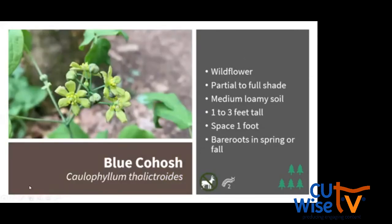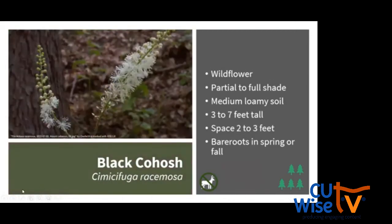Shifting to other woodland wildflowers — blue cohosh is one I added to my garden last fall. It prefers partial to full shade in medium loamy soil but can tolerate clay, growing 1 to 3 feet tall. It produces unique green flowers that are then replaced by blue berries — which are toxic to humans, but birds will eat and spread the seeds. Another reason for the name is that the stem is blue-green in color. Plant bare roots in spring or fall. It supports two different species of caterpillars.